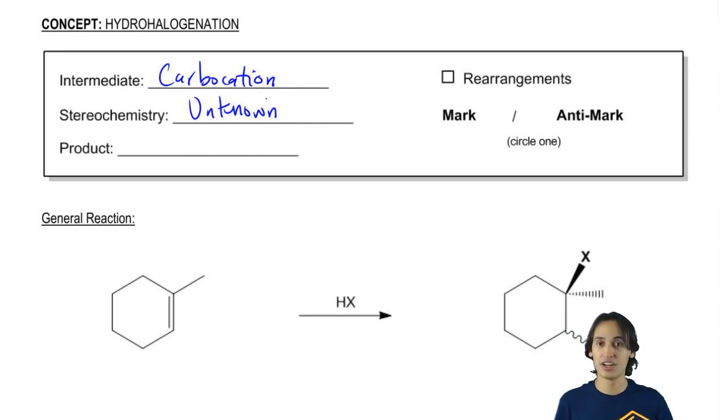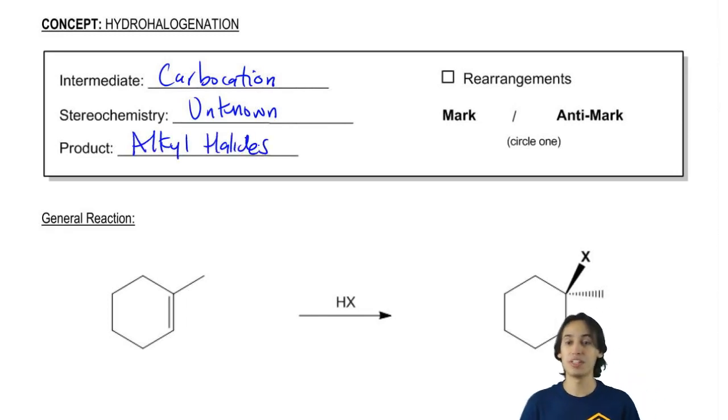So the product here is going to be alkyl halides. So what that means is I'm going to go from double bonds to alkyl halides using hydrohalogenation.